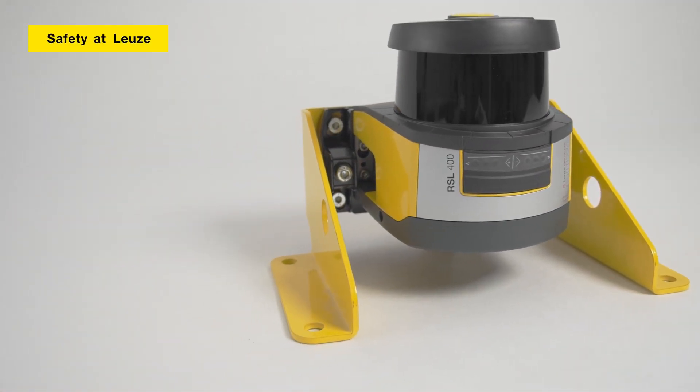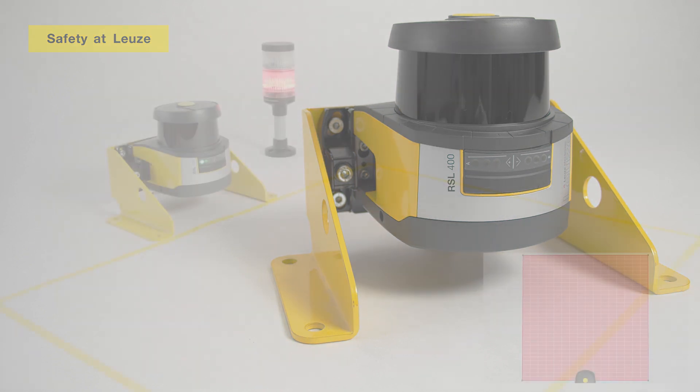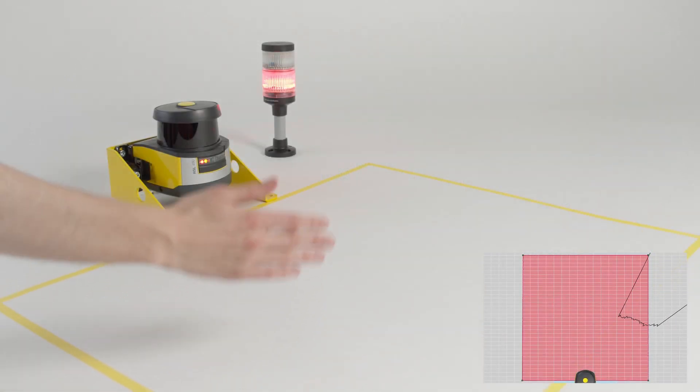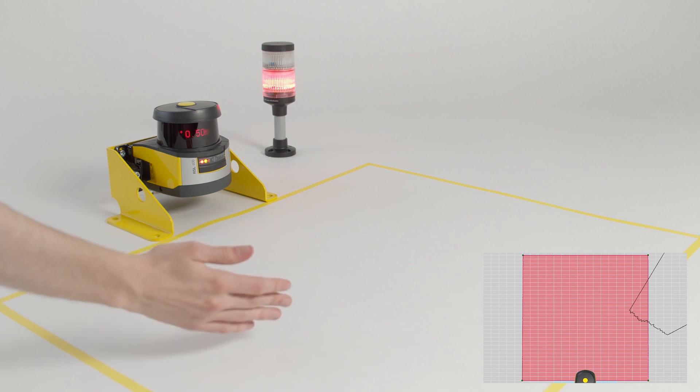The RSL400 safety laser scanners are used for monitoring areas and are characterized by their robustness and many clever functions. With the RSL400 the entire transmitting and receiving system rotates.